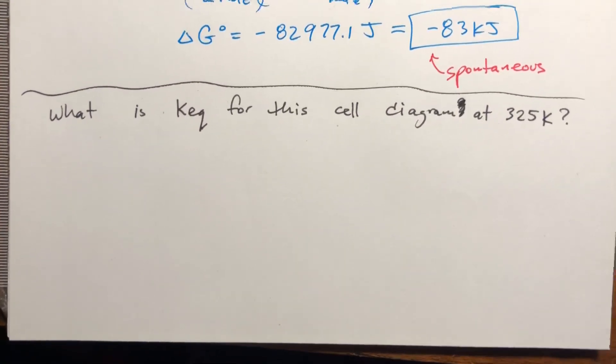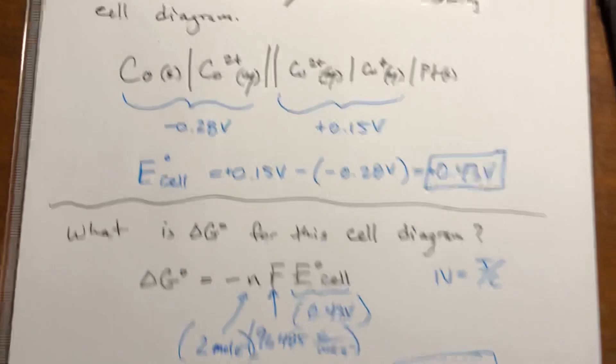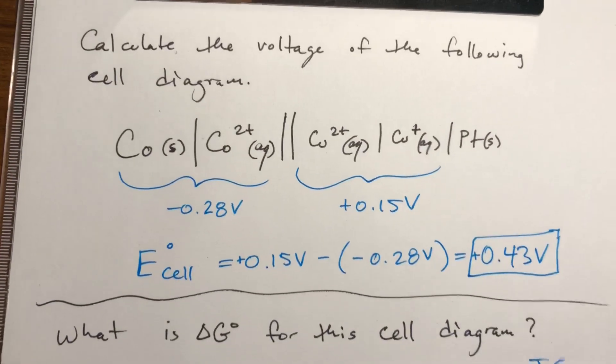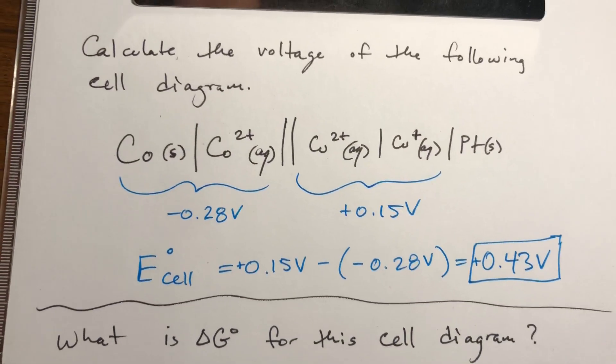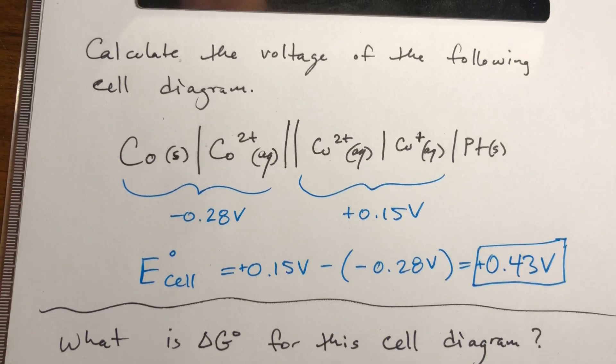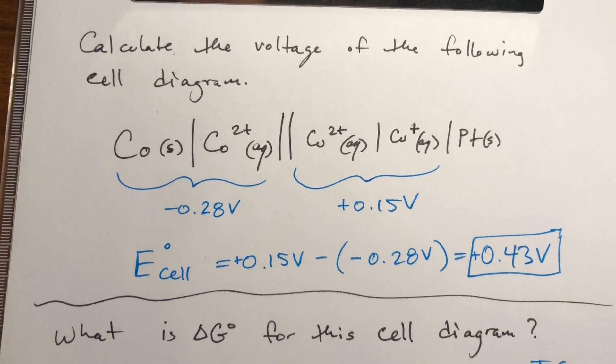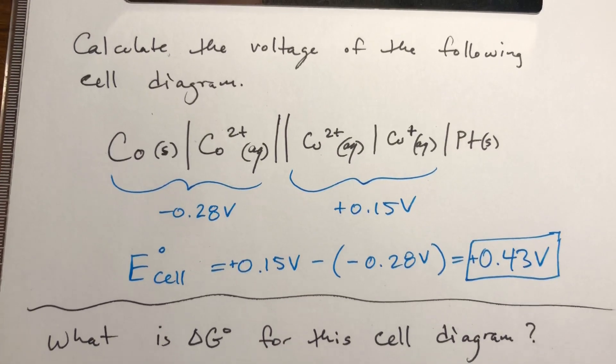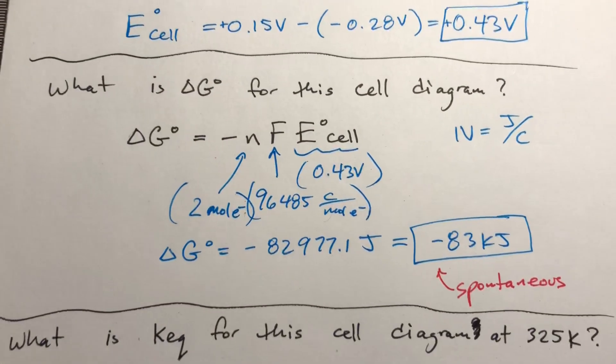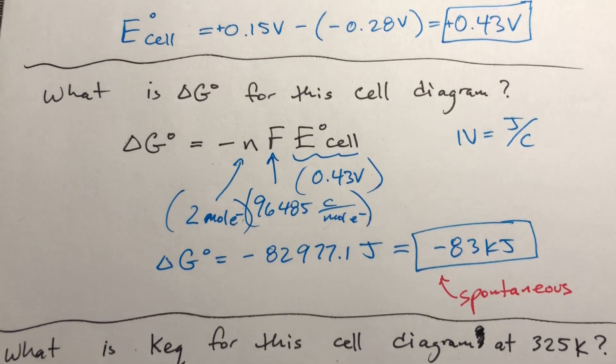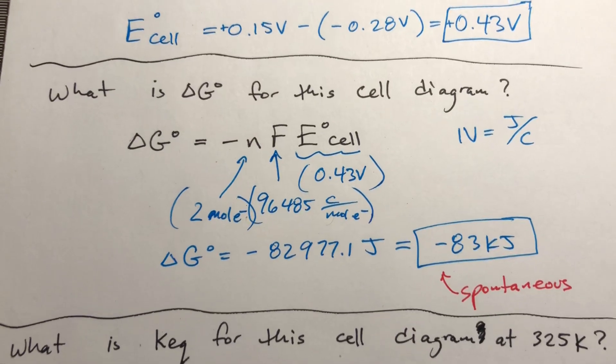Okay, continuing a variation of the last problem. So far we have this cell diagram, and we solved for the voltage by looking at the electron or reduction potential table. We got positive 0.43 volts. Then we used that to solve for delta G, which gave us negative 83 kilojoules, which tells us the reaction is spontaneous.